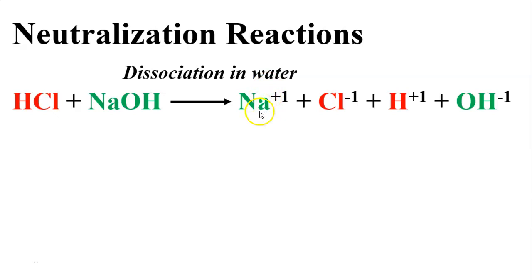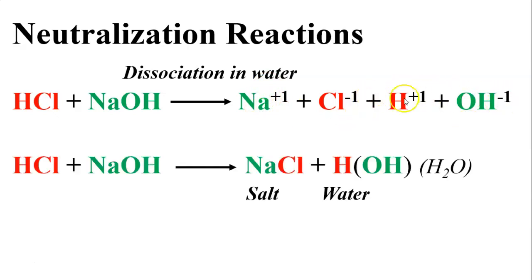That Na is going to come apart in all of this. And then they rearrange to form a salt and a water, HOH, which is really just H2O. So an acid plus a base makes salt and water.